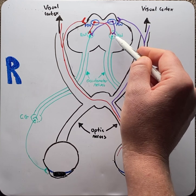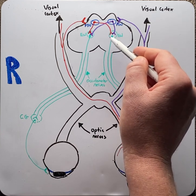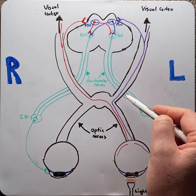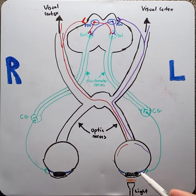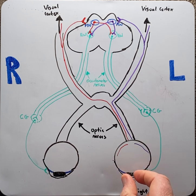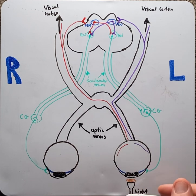Here it will activate the parasympathetic portion of the left oculomotor nerve and be carried back to the eye via the ciliary ganglion and the short ciliary nerves. Here it will activate the iris sphincter muscles and cause constriction of the pupil. This is the direct response.